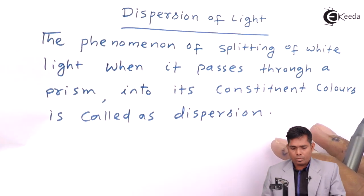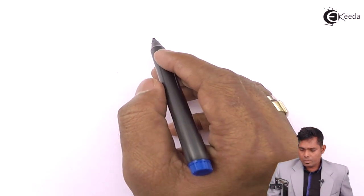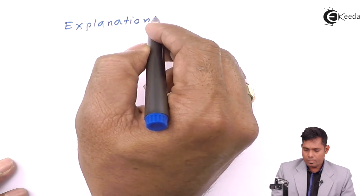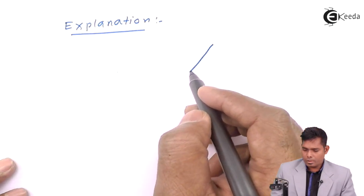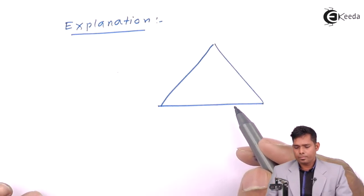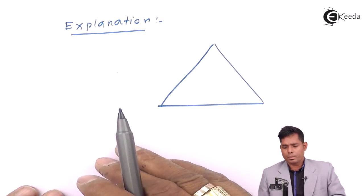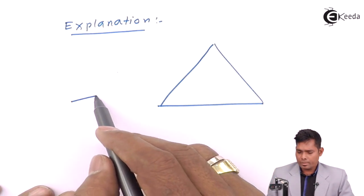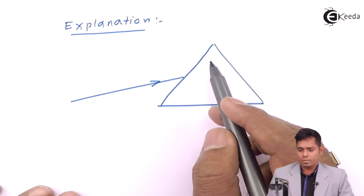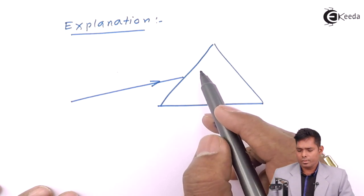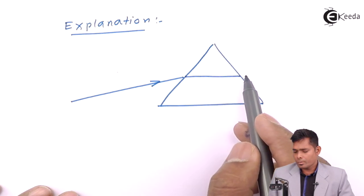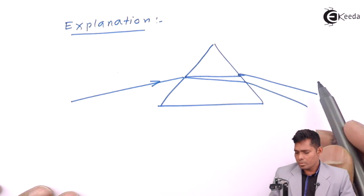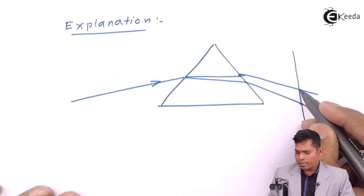Let us have a diagram to understand what is dispersion. Let us say this is a prism — this is the principal section of the prism, which we will discuss later. When a ray of light strikes the refracting surface, it splits into seven colors.